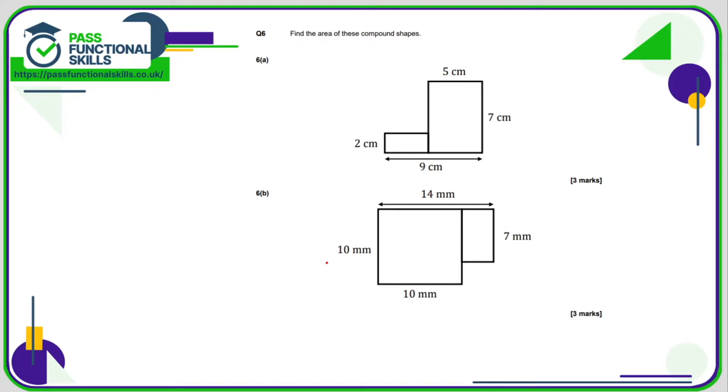Question number six is a calculator question again. So the compound shapes have been broken down into two rectangles. This one's 5 by 7, which is 35. This is 2 by, it's not 2 by 9. We just want this distance here. So if it's 9 across the bottom and 5 from here to here, then this must be 4. Two fours are 8. So all together, 35 plus 8, which is 43 square centimeters.